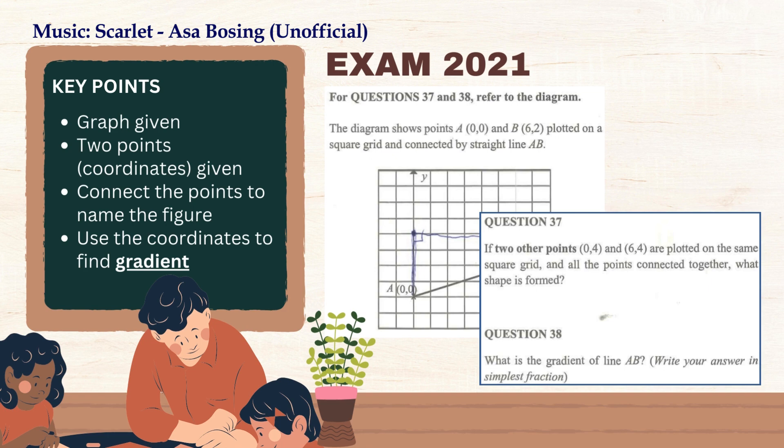However, with question 37, we are tasked to utilize the content knowledge on identifying basic shapes to name the figure when all points are joined. Note that question 37 is given in such a way to analyze the student's comprehension level, more like testing their reasoning capability. However, with question 38, students are required to use the gradient formula to calculate the behavior between the two points. Now take a moment to read through the questions.